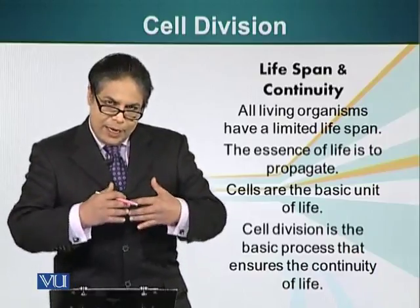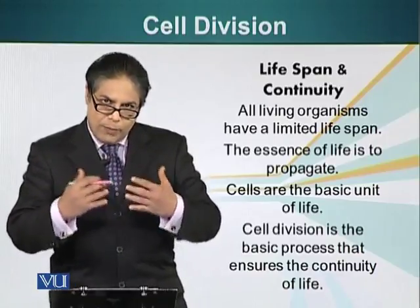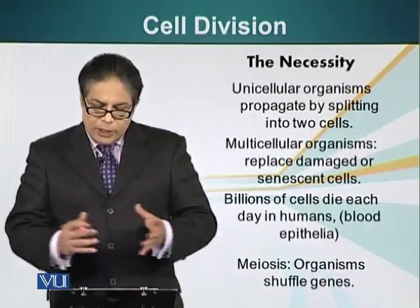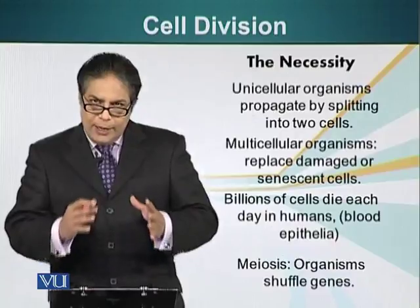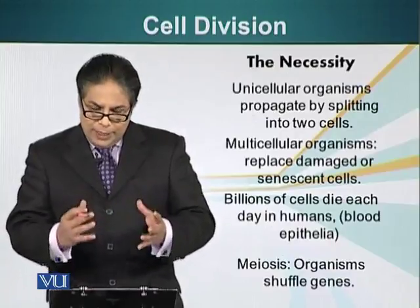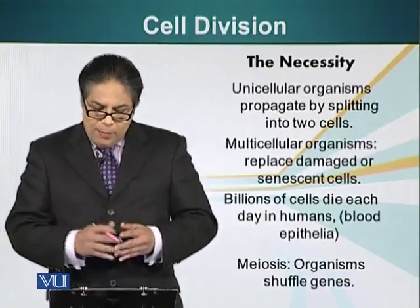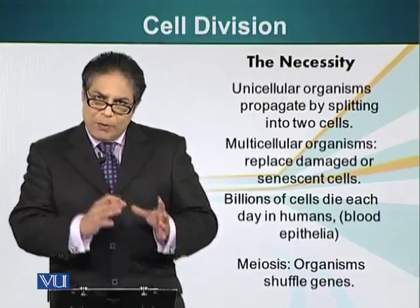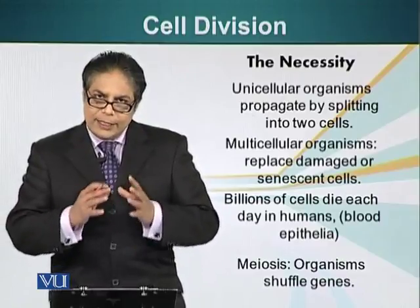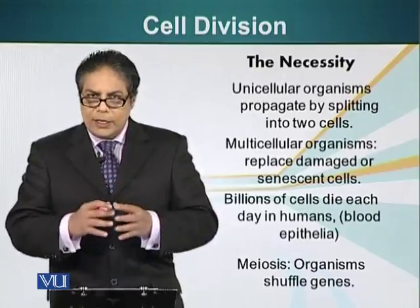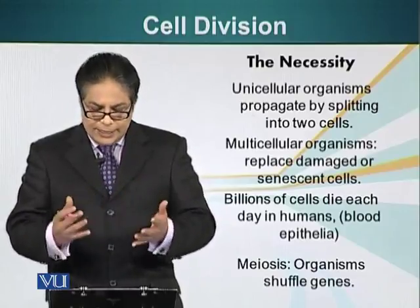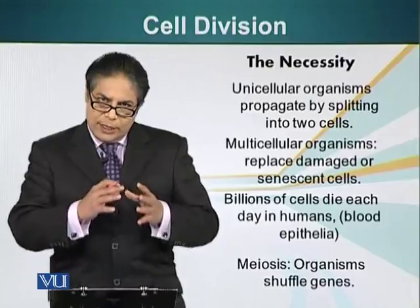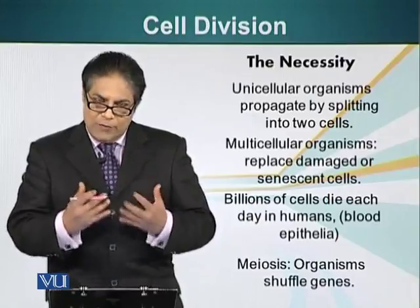From one cell we can make more than one cell, or two cells. Unicellular organisms propagate by splitting into two cells. Multicellular organisms — organisms that are made up of many cells — need cell division to replace old, dead, or senescent cells in order to keep their organs and tissues functional and viable.